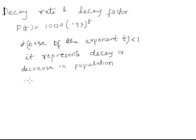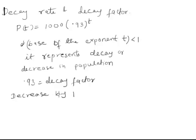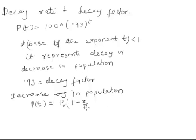This term 0.93 inside the bracket is called the decay factor. Now to calculate the decay rate, we compare it with the standard formula for decrease in population: p(t) equals p-naught times 1 minus r over 100 raised to t, where 1 minus r over 100 is used for decrease and 1 plus r over 100 for increase.